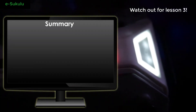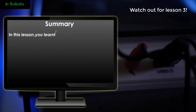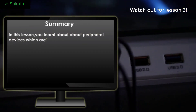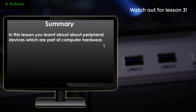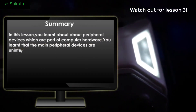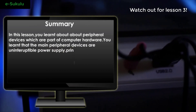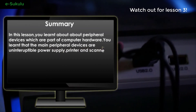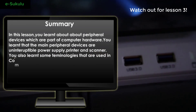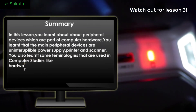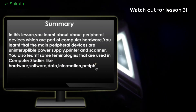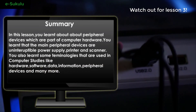Summary. In this lesson, you learnt about peripheral devices which are part of computer hardware. You learnt that the main peripheral devices are the uninterruptible power supply, printer, and scanner. You also learnt some terminologies used in computer studies like hardware, software, data, information, peripheral devices, and many more.